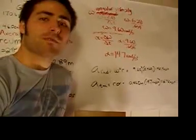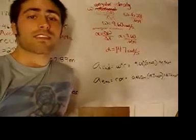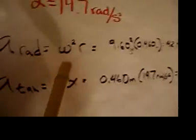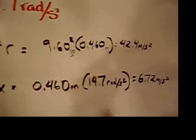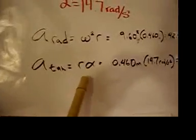Now we need to find the acceleration I was rotating at. So we first need to find the radial acceleration and the tangential acceleration. Using the formula omega squared times radius, we find that 9.6 radians per second squared times 0.46 meters gives us 42.4 meters per second squared. For our tangential acceleration, we use the formula radius times alpha, which equals 0.46 meters times 14.7 radians per second squared, which gives us 6.72 meters per second squared.